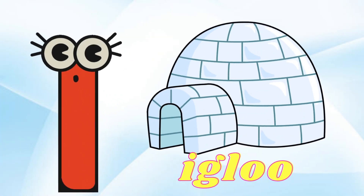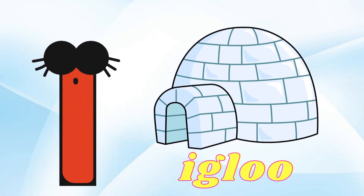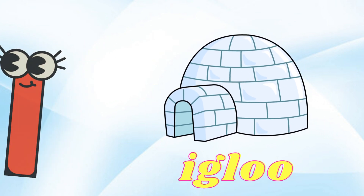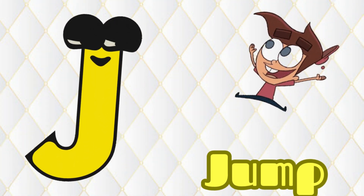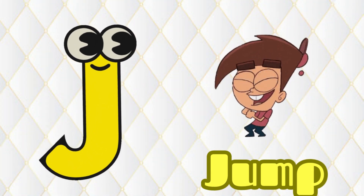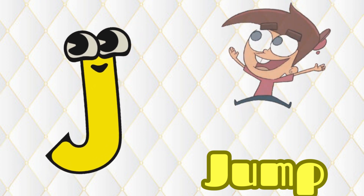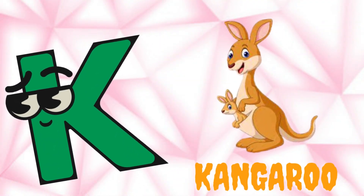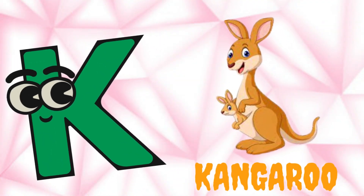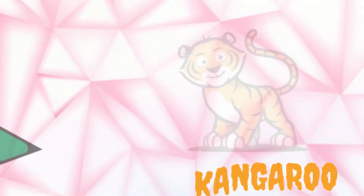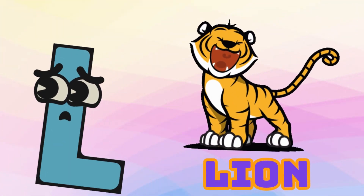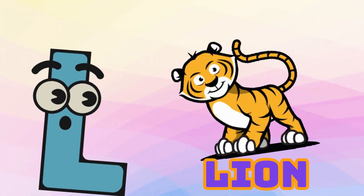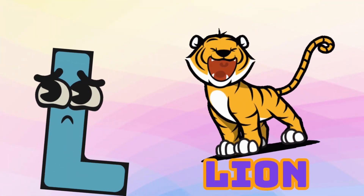I is for Igloo, I-I-Igloo. J is for Jump, J-J-Jump. K is for Kangaroo, K-K-Kangaroo. L is for Lion, L-L-Lion.